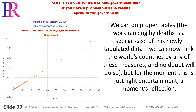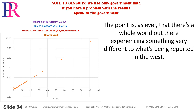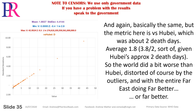We can do proper tables; ranking by this is a special case of this newly tabulated data — we can rank the world's countries by any of these measures. The point is that there's a whole world out there experiencing something very different from what's being reported in the West. The metric versus WHO Bay is about two death days average (1.8), so 3.8 divided by 2 — the world did a bit worse than WHO Bay, distorted by outliers, with the entire Far East doing far better.